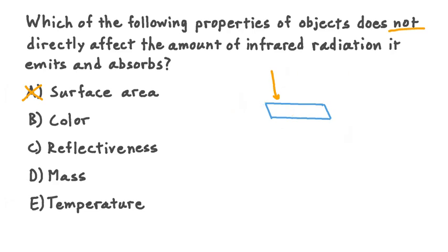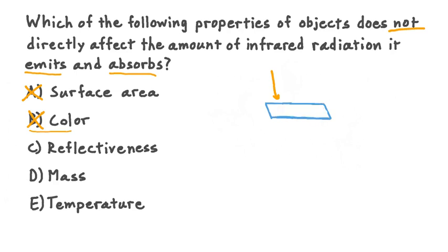Moving to color: if our material is a light color, say white, then it will be highly likely to reflect any infrared radiation incident on it, so any radiation that's reflected is not absorbed — this property does affect absorption. On the other hand, if our material had a dark color, it would be more likely to absorb radiation and less likely to reflect it, and a strong infrared absorber is also a strong infrared emitter. So color does indeed affect emission and absorption — option B is not our answer. Reflectiveness: if the material is very smooth and polished like a mirror, it will have high reflectivity and low absorption. If it's very rough, it's better at absorbing and worse at reflecting. So reflectiveness does directly affect emission and absorption.